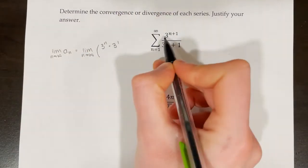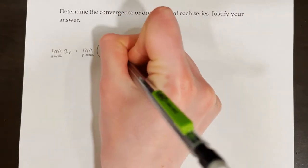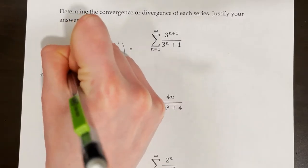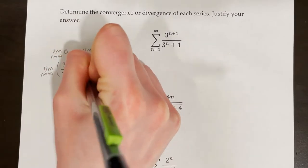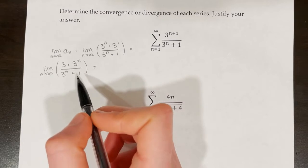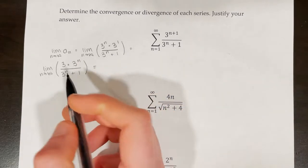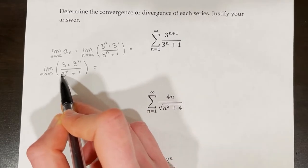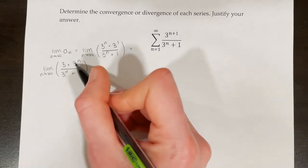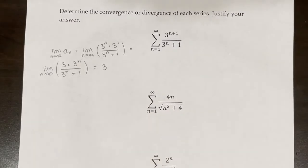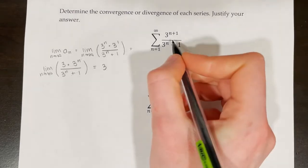This becomes the limit as n approaches infinity of 3 times 3 to the power of n in the numerator, over 3 to the power of n plus 1 in the denominator. Thinking about this analytically: both numerator and denominator have 3 to the power of n, and adding 1 to the exponent is not consequential in the long term, so these cancel, leaving just 3. The limit as n approaches infinity of a sub n is equal to 3.